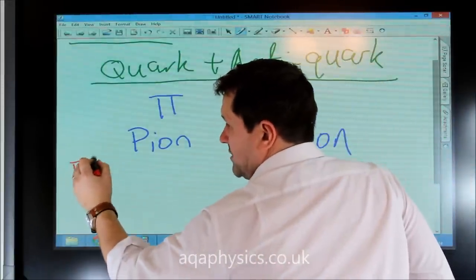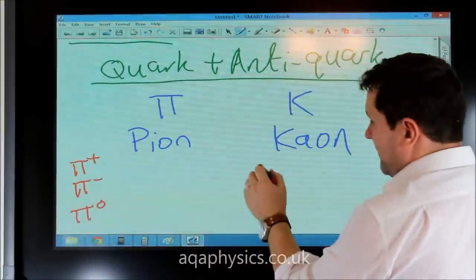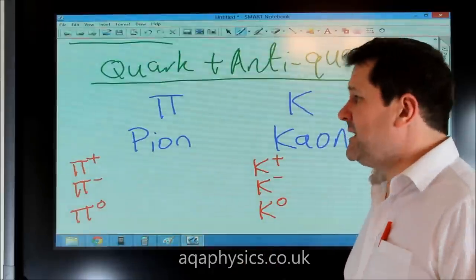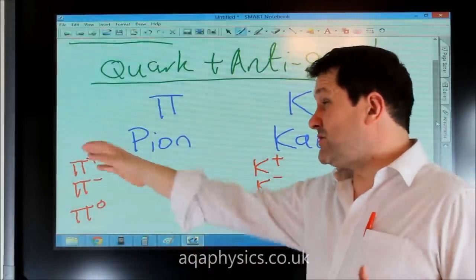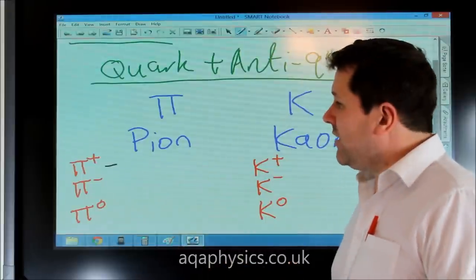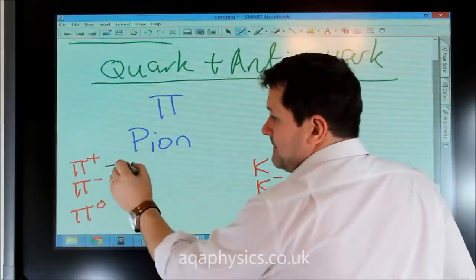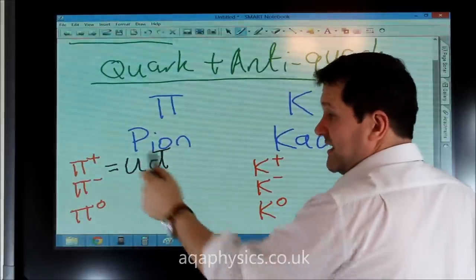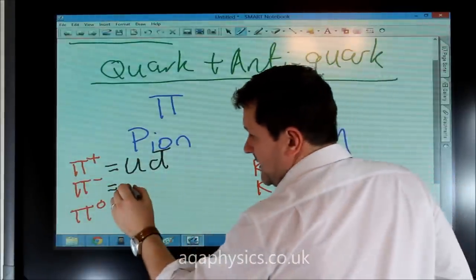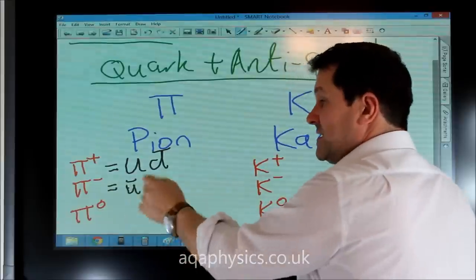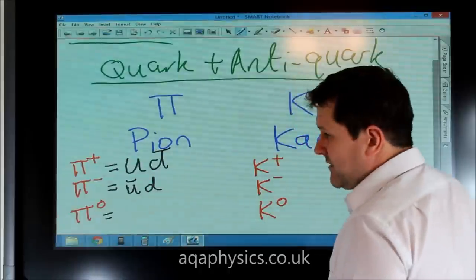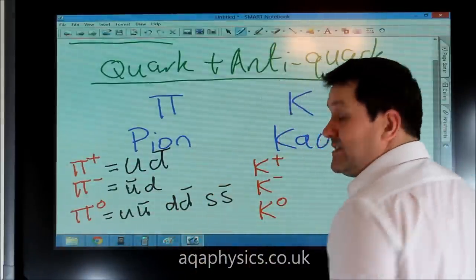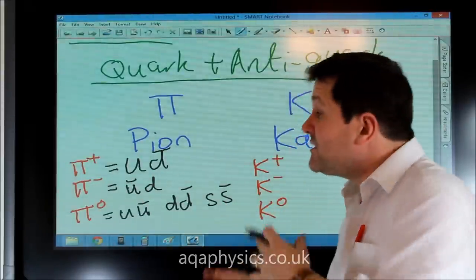We could have pi-plus, pi-minus, or pi-zero. Since pions have no strangeness, they contain no strange quark. To make pi-plus with a quark and anti-quark, it must be up, anti-down: plus two-thirds plus one-third gives plus one. For pi-minus it must be anti-up, down: minus two-thirds minus one-third gives minus one. For pi-zero there are several possibilities: up anti-up, down anti-down, or even strange anti-strange, because that combination has no net strangeness.